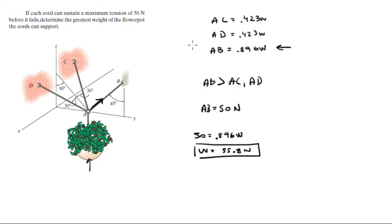So basically all the work that we did is to find which one has the greatest amount of the weight. When we found which one holds the greatest amount of the weight, then we set that one equal to 50, which is the maximum that the cords can handle. And then we solve for the weight. And we got the maximum amount of weight that the flower pot can be in order for the system of cords to be able to maintain equilibrium and not fail. Final answer.